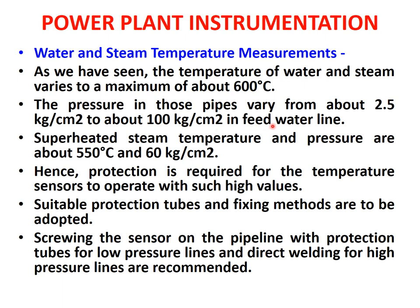The pressure in the pipes may vary from about 2.5 kg per centimeter square to about 100 kg per centimeter square in the feed water line. For superheated steam, temperature and pressure are about 550 degrees Celsius and 60 kg per centimeter square. Since these are high values, protection is required for the temperature sensors. Suitable protection tubes and fixing methods must be adopted.